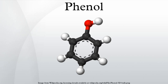Aqueous solution of phenol is weakly acidic and turns blue litmus slightly to red. Phenol is easily neutralized by sodium hydroxide forming sodium phenate or phenylate, but being weaker than carbonic acid, it cannot be neutralized by sodium bicarbonate or sodium carbonate to liberate carbon dioxide. When a mixture of phenol and benzoyl chloride is shaken in the presence of dilute sodium hydroxide solution, phenol benzoate is formed. This is an example of the Schotten-Baumann reaction: C6H5OH + C6H5COCl → C6H5OCOC6H5 + HCl.